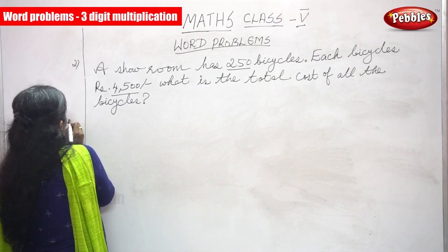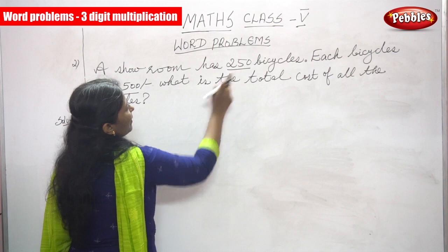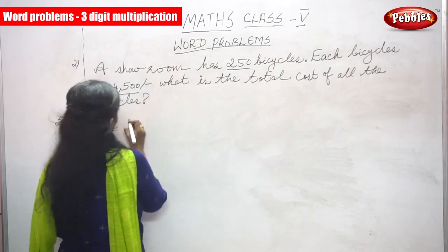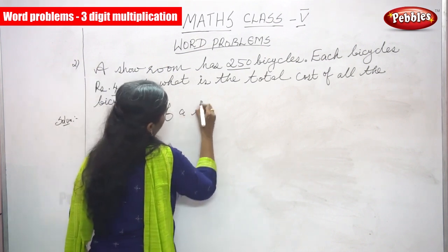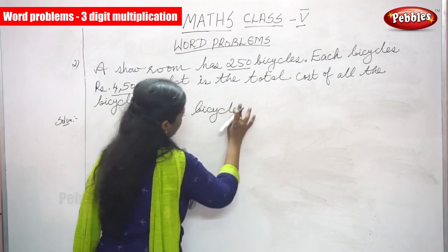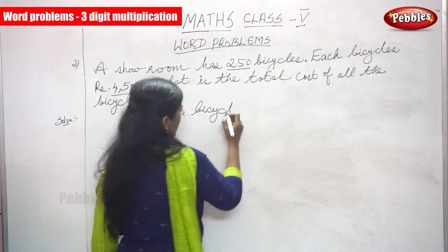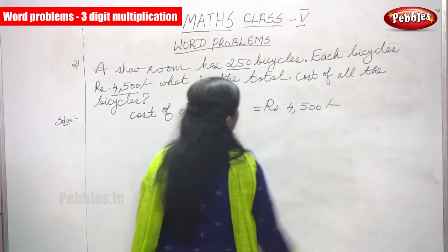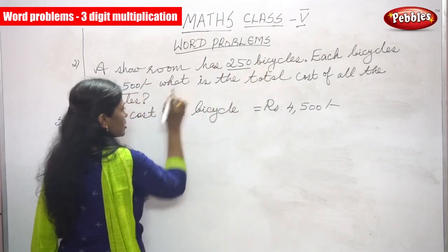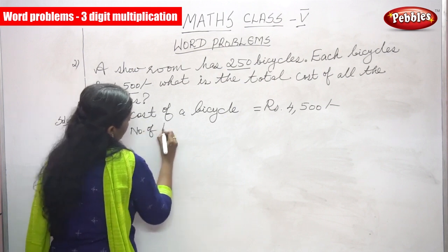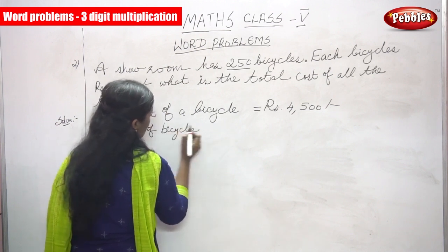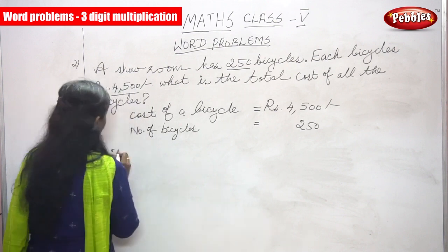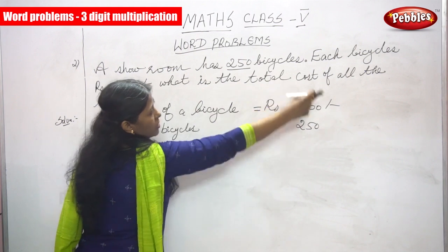Solution. You have to always write solution — that is the right method. Now we are going to see the sum. A showroom has 250 bicycles. Each bicycle rupees 4500. So first you have to write: cost of a bicycle is equal to rupees 4500. A showroom has 250 bicycles, so number of bicycles is equal to 250. Therefore, what did they ask? What is the total cost of all the bicycles?